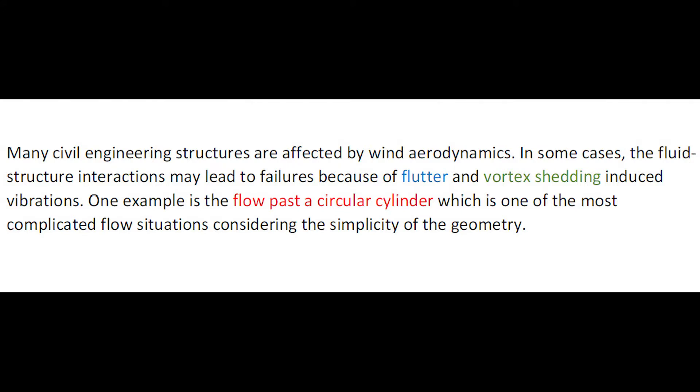Many civil engineering structures are affected by wind aerodynamics. In some cases, the fluid structure interactions may lead to failures because of flutter and vortex shedding induced vibrations. One example is the flow past a circular cylinder, which is one of the most complicated flow situations considering the simplicity of the geometry.